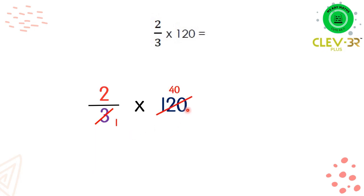So this 40, we need to times with the numerator. All right, so 2 times 40, we will get 80 as the final answer.